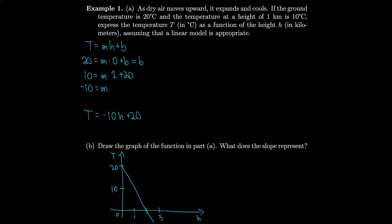What does the slope represent? The slope m is negative 10, and that means the temperature is going down 10 degrees for every 1 kilometer that the height changes. So it's negative 10 degrees Celsius per kilometer. That represents the rate of change of temperature T with respect to height H.